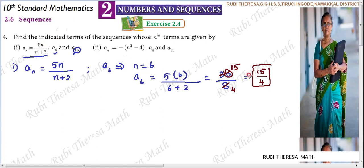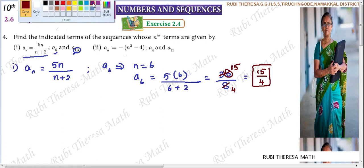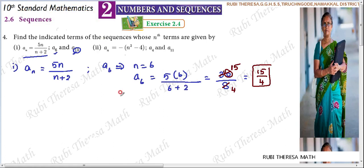So directly the 6th term is 15 by 4 — you just substitute the n value easily. Next, we find a13.